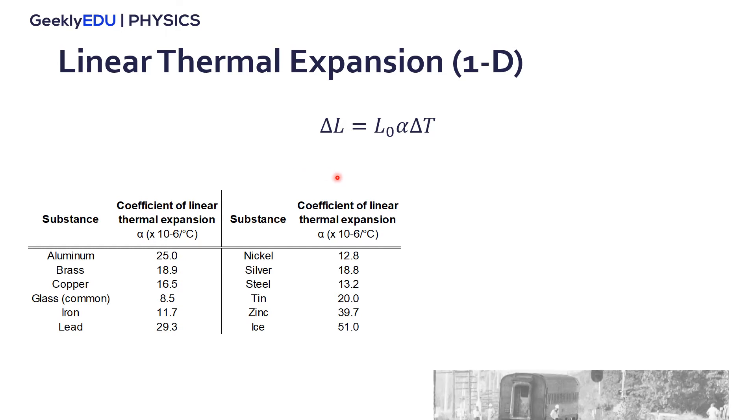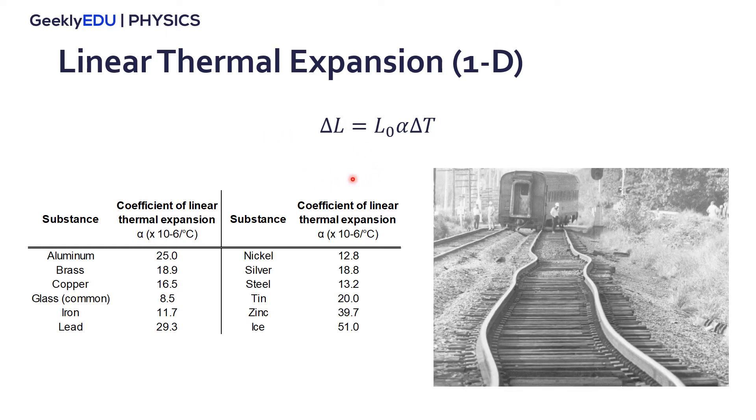An example where you can see this linear expansion, linear thermal expansion is in railroads. So in a railroad we can despise the expansion in the other two dimensions because they are fairly small compared to the length of the railroad and if we don't have space between each section of the railroad we can have something that looks like this. In very hot weathers you can expand and then destroy the railroad.